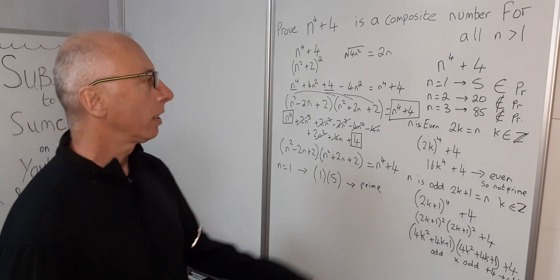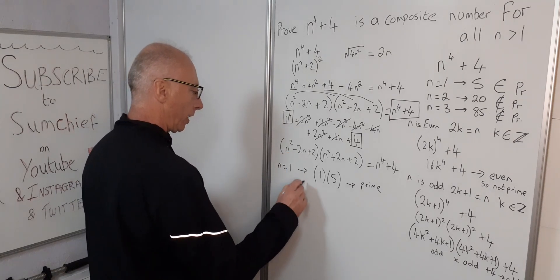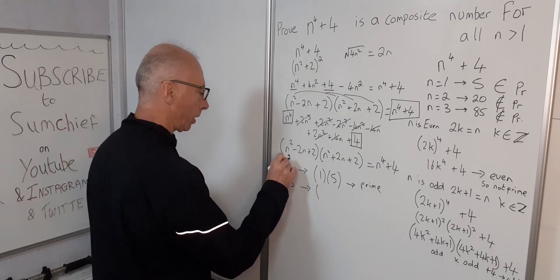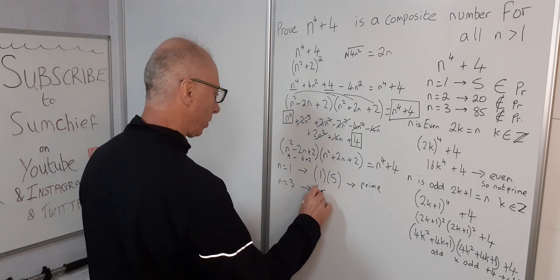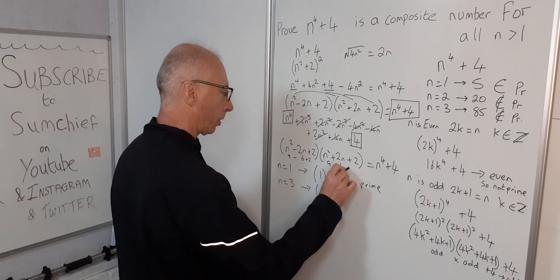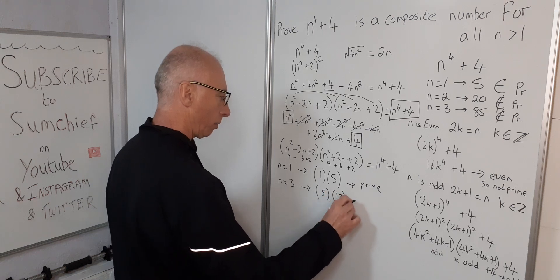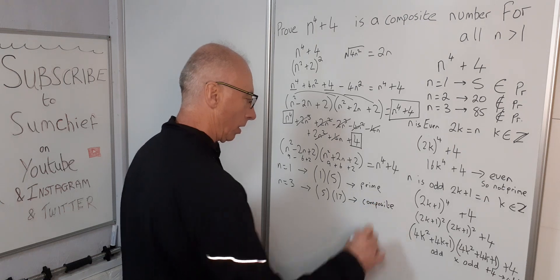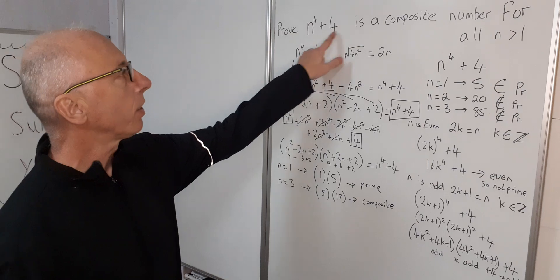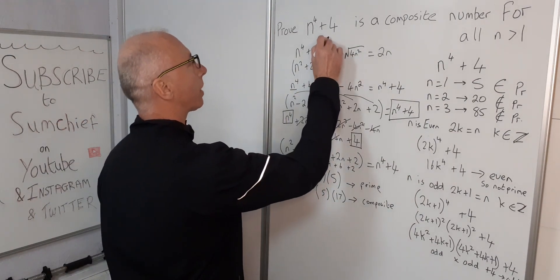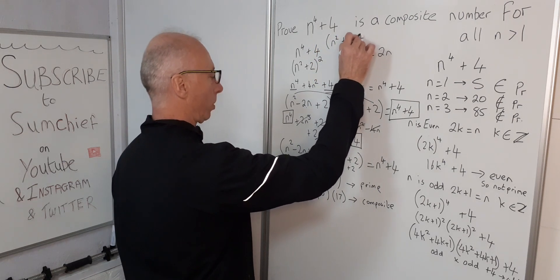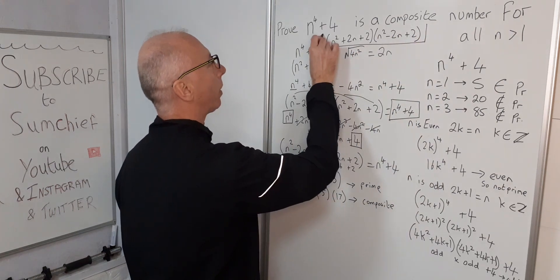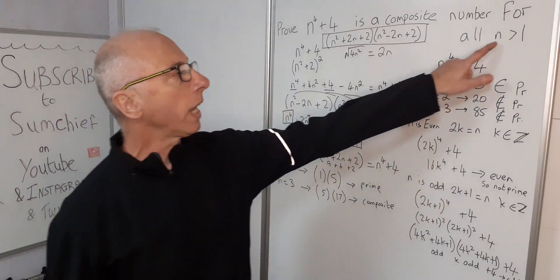Let's try n equals 3, which we already checked. We get 3 squared minus 6 plus 2, that's 9 minus 6 plus 2, which gives 5. Then 9 plus 6 plus 2 gives 17. So 5 times 17 equals 85, which is a composite number. Therefore we can see that the way to prove n to the 4 plus 4 is composite is by using the factorization n squared plus 2n plus 2 times n squared minus 2n plus 2, which shows it's always a composite number for all n greater than 1.